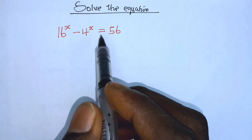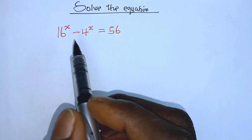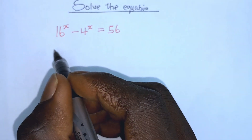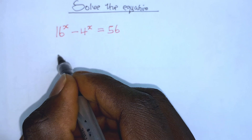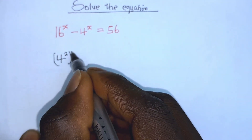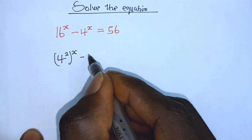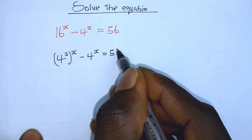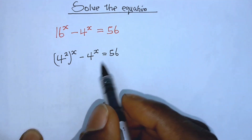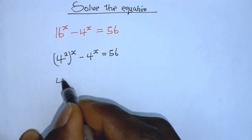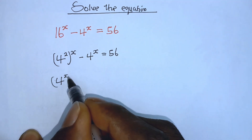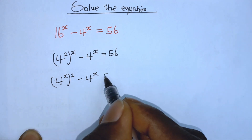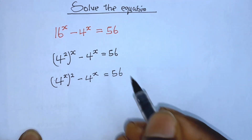The first step we can do here is to write 16 at its index, that is, we have 4 to the power of 2, to the power of x, minus 4 to the power of x, which is equal to 56. Therefore, 4 to the power of x, squared, minus 4 to the power of x, which is equal to 56.